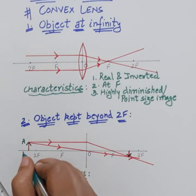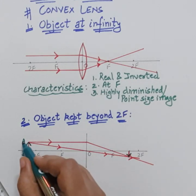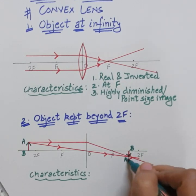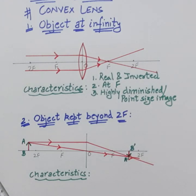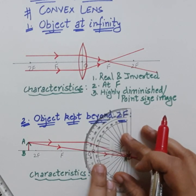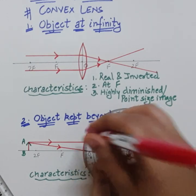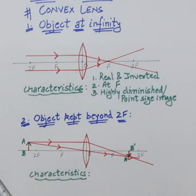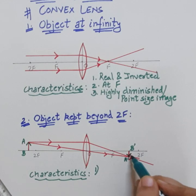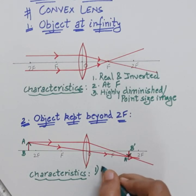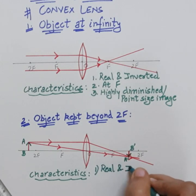Now draw the arrow for the object to show it is upside down. Label the object as AB and the image as A'B'. Draw the shape of the lens. The first characteristic is whether it is real or virtual. Since the image is inverted and formed by real intersection of the rays, the image is real and inverted.